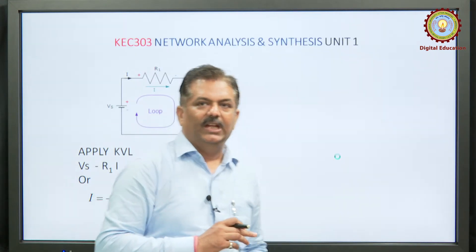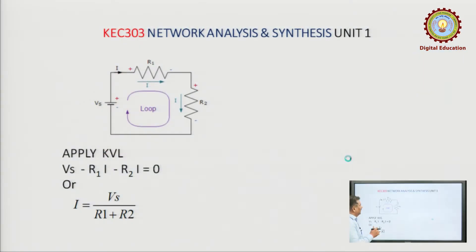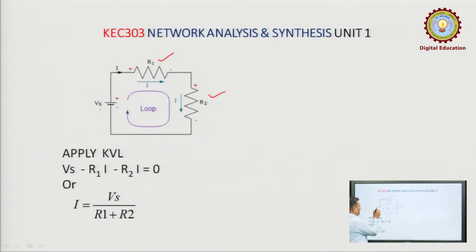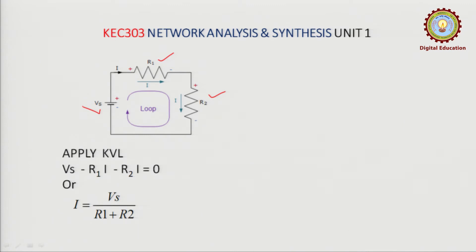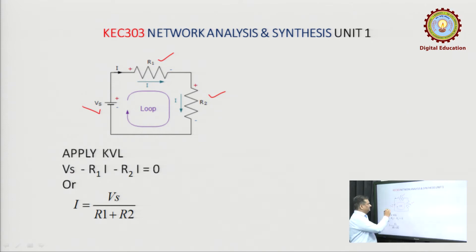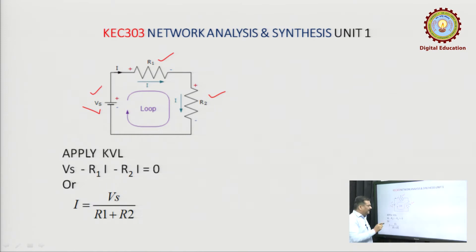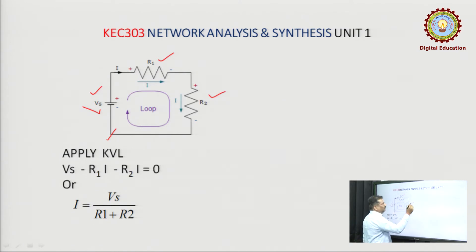Let us see a network with two resistances R1 and R2 connected in series, driven by a voltage source Vs. This is a closed network, so current will flow. Let us assume the flowing current is I. There are three elements: voltage source, resistance R1, and resistance R2. Starting KVL from one end — in the voltage source, current I is moving from minus to plus, so voltage drop is positive: +V. In passive elements, current moves from higher to lower voltage, so voltage drop is negative: -R1×I and -R2×I.